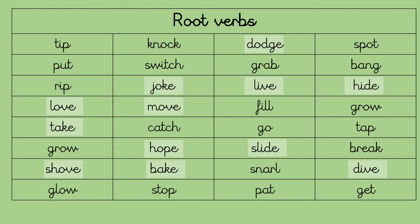These are all our root verbs: love, take, shove, joke, move, hope, bake, dodge, live, slide, hide and dive. We know what love is, take, shove — that's to push. Joke, move. Hope — it's when you think something positive will happen even if you're not too sure; you keep trying, thinking maybe it will be okay. And bake — a lot of people have been doing some baking. Dodge — that's to move out of the way. Live, slide, hide and dive — dive is when you jump into the water and go underneath it.